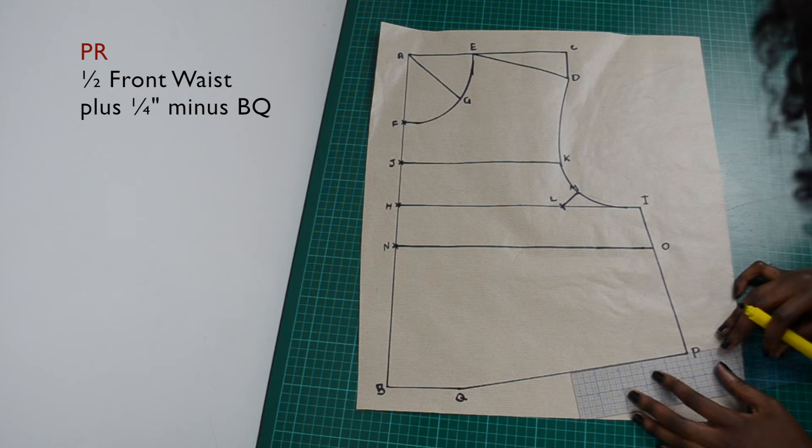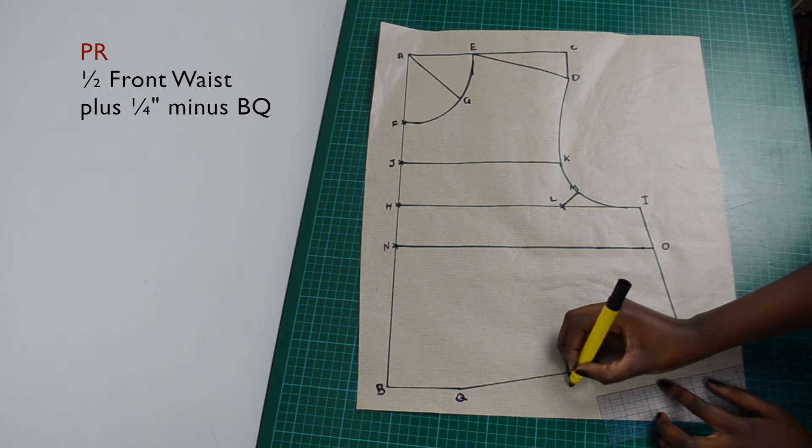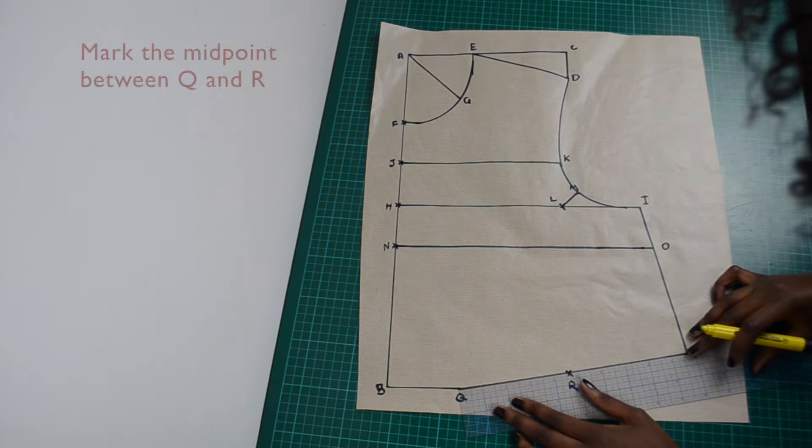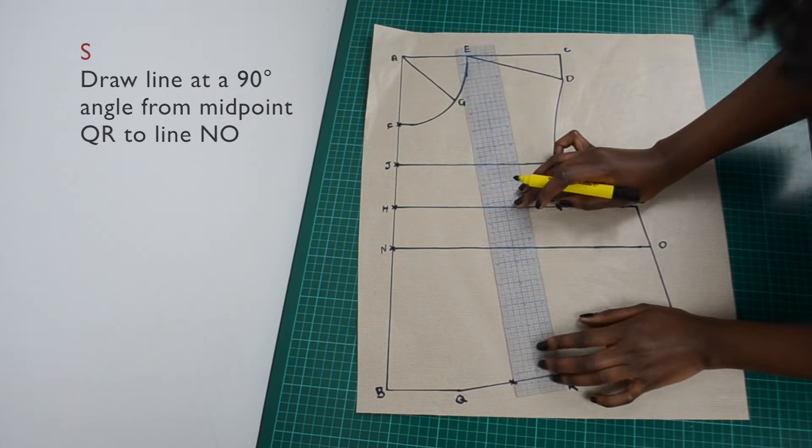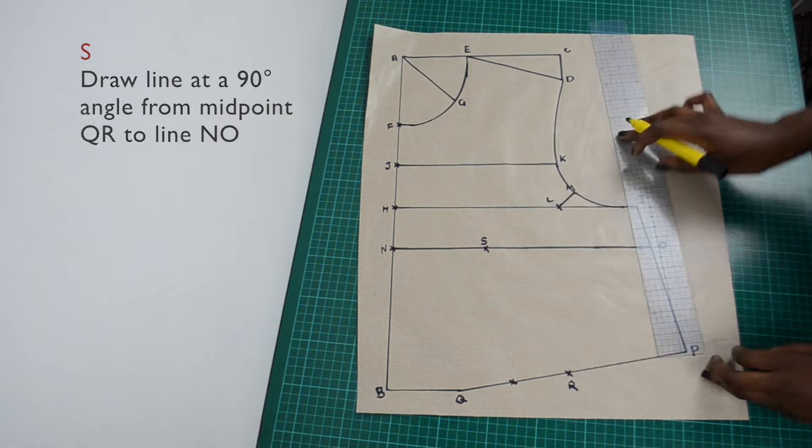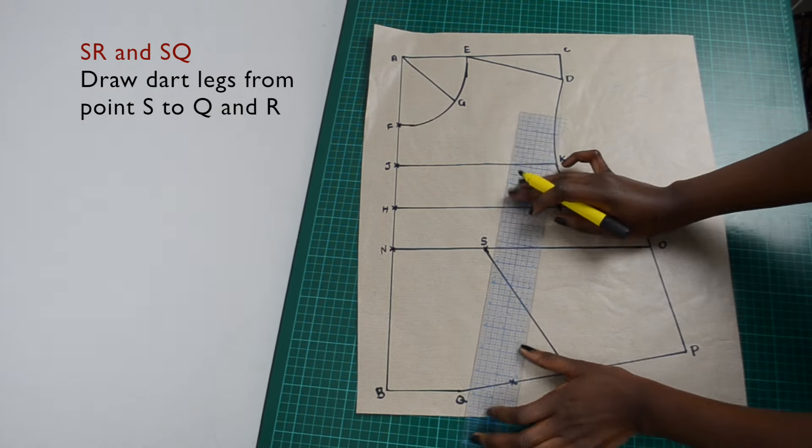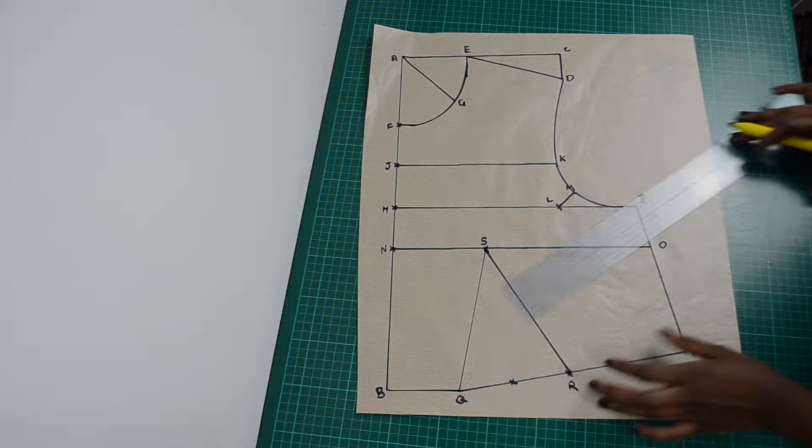Take half of your front waist measurement, add one quarter of an inch, then minus the length of BQ. Make sure your ruler is held at 90 degrees to line QR. And that is it for your front bodice.